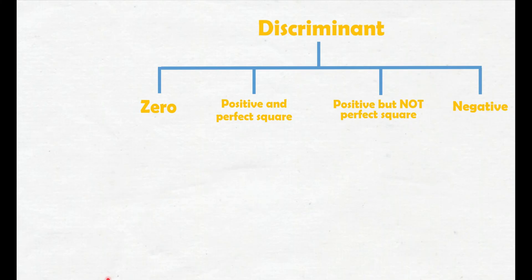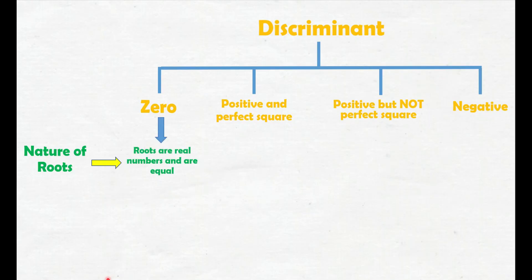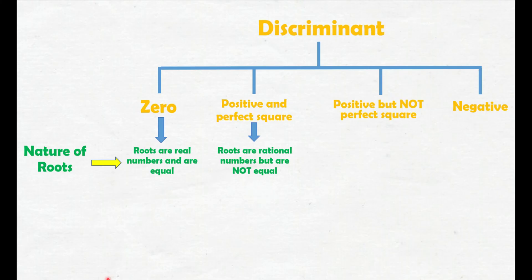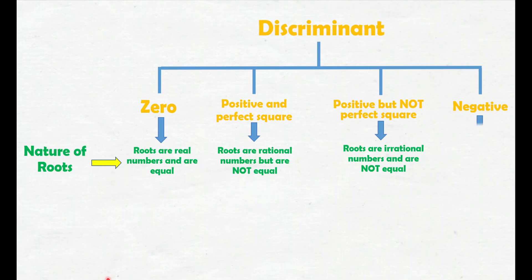Hindi na natin kailangan i-solve pa ang roots para malaman ang nature nito. Kapag ang discriminant ay 0, ang nature ng roots ay real numbers and are equal — magkaparehong roots na real numbers. Kapag ang discriminant ay positive and perfect square, ang nature ng roots ay rational numbers but are not equal. Kapag positive but not perfect square, irrational numbers and are not equal. Kapag negative, then there are no real solutions or roots. Para mas maintindihan, magbibigay tayo ng mga examples.